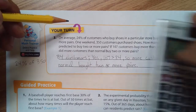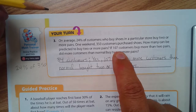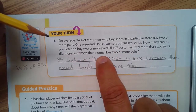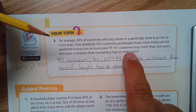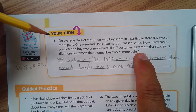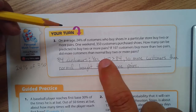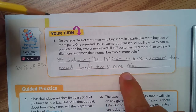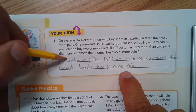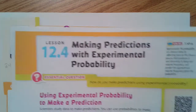If 107 customers buy two or more pairs, did more customers than normal buy two or more pairs? Yes — because 107 is bigger than 84. So more customers than normal bought two or more pairs, since 107 exceeds what normally happens. And that is what you need to know about making predictions with experimental probability. Thanks for watching.